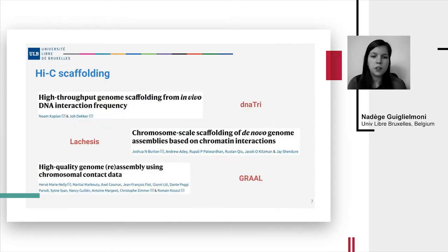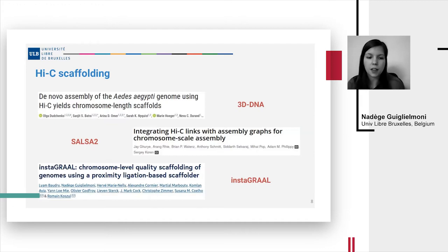There have been several Hi-C scaffolders developed based on this principle: at the beginning DNA3, Lachesis, GRAAL and more recently 3D-DNA, SALSA, SALSA2 and INSTAGRAAL. And with these scaffolders we can obtain some very nice chromosome level haploid assemblies.